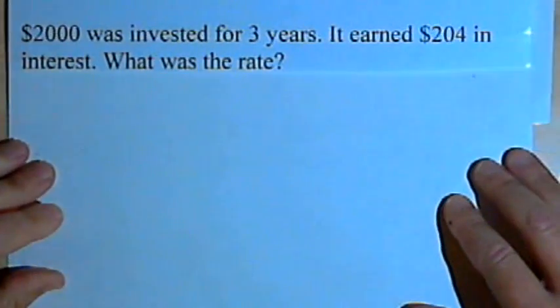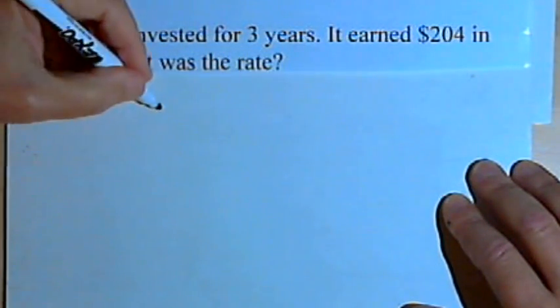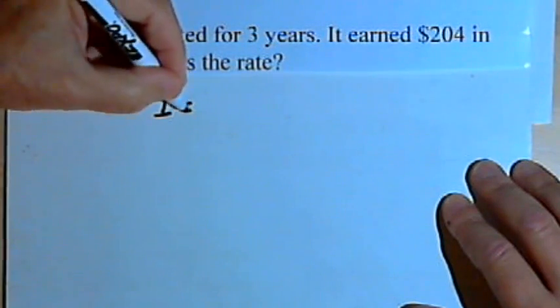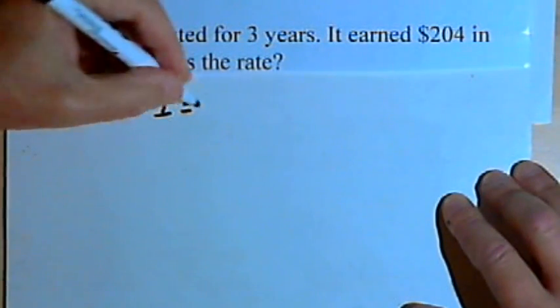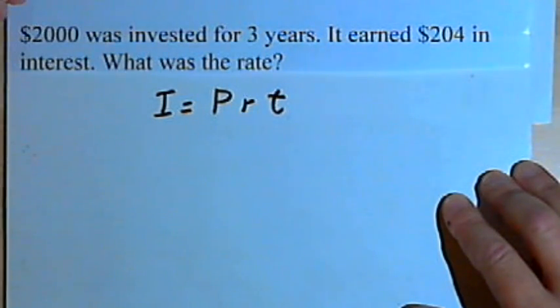Here's the next one. $2,000 was invested for three years. It earned $204 in interest. What was the rate? Here's our basic formula: interest equals principal times rate times time.